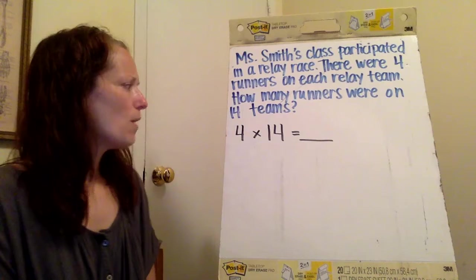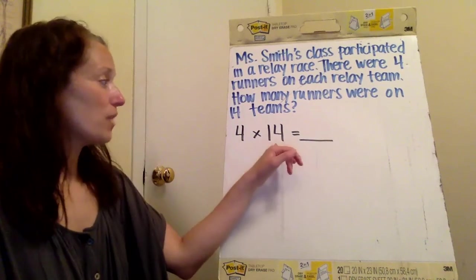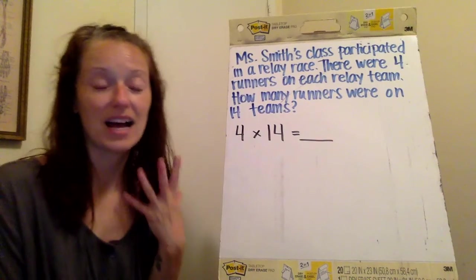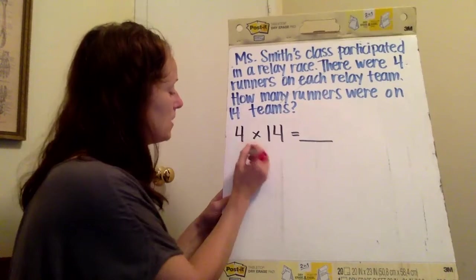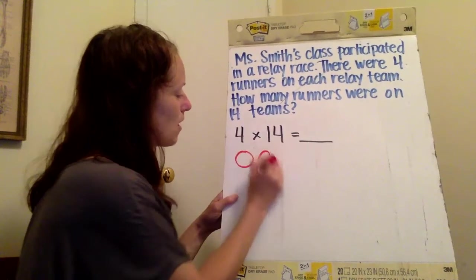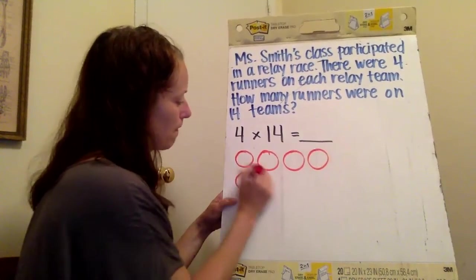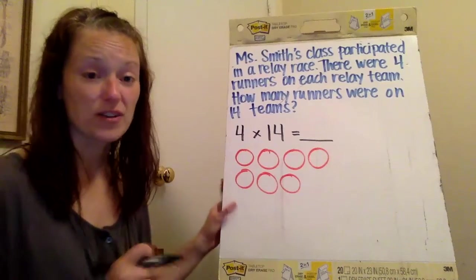So one way that I might do this because I know that 14 is seven and seven. And this is a problem that I know, a multiplication problem I know because I know seven times four. So I'm going to start off by drawing seven teams. And then I'm going to put my four runners in each team.